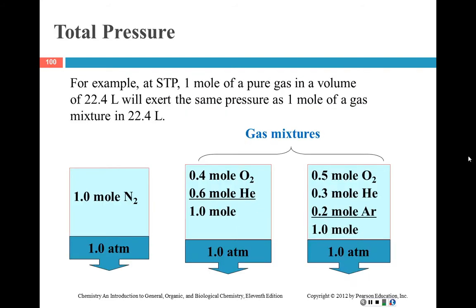At STP we know that a mole of pure gas will be in a volume of 22.4 liters and will exert the same pressure as one mole of a gas mixture. So you got one mole of nitrogen and it will exert one atmosphere. If you've got 0.4 moles of oxygen and 0.6 moles of helium, that's one mole total and it will also exert one atmosphere.